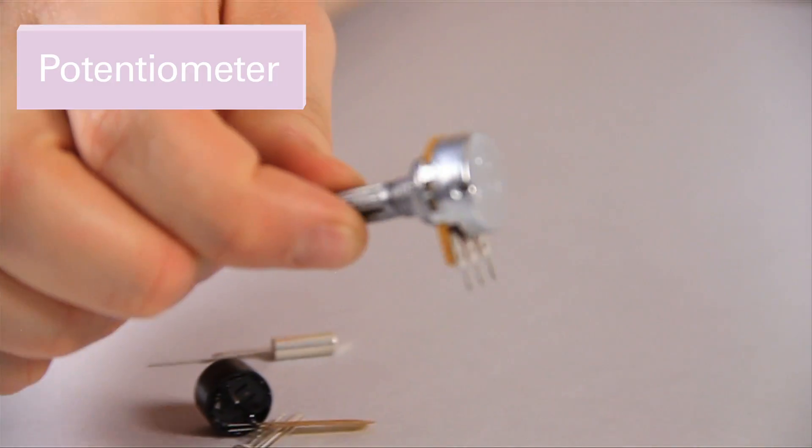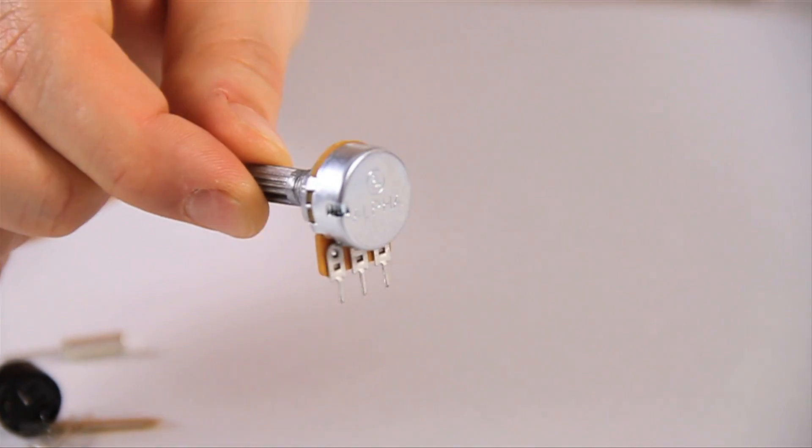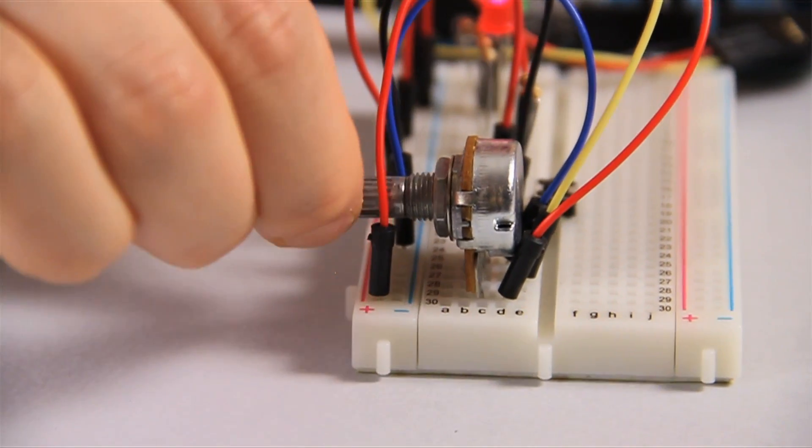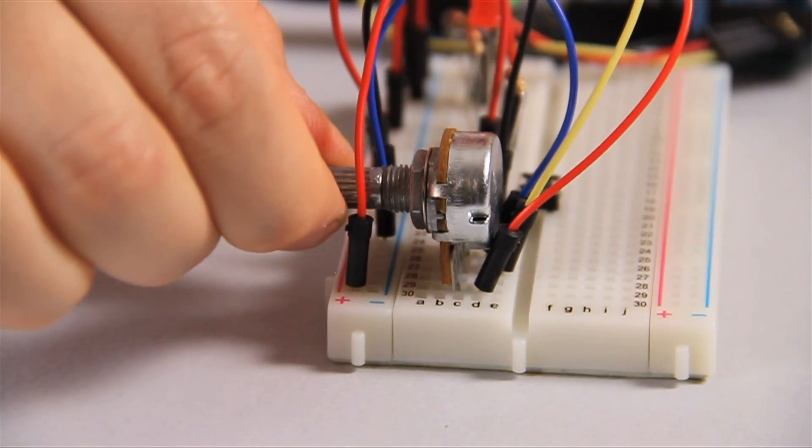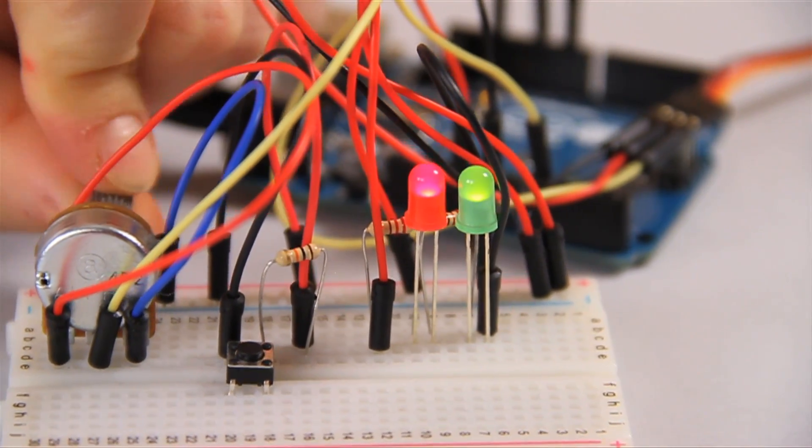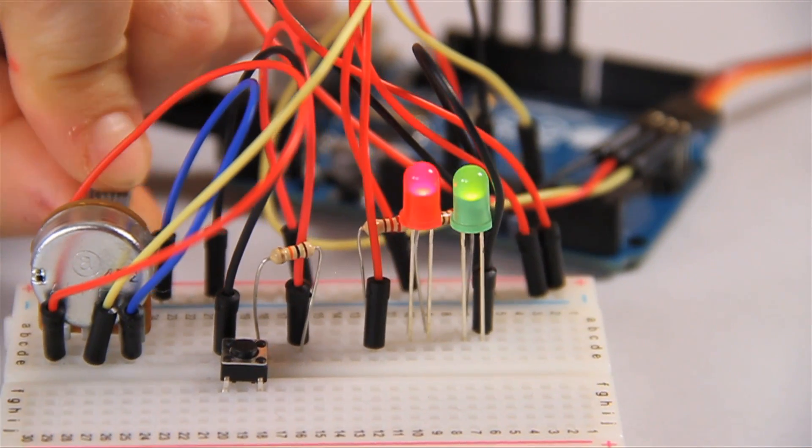The next one is this big metal object called your potentiometer. So you can twist it like this. A potentiometer is a resistor that you can control. Turning the knob on the potentiometer increases and decreases the amount of resistance, a bit like a tap and the flow of water.